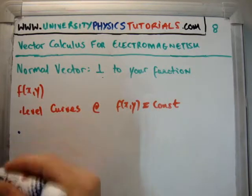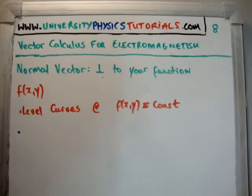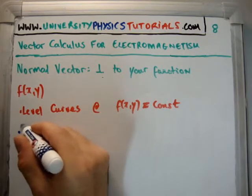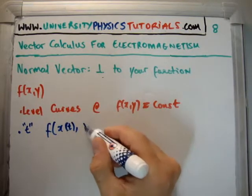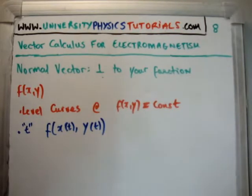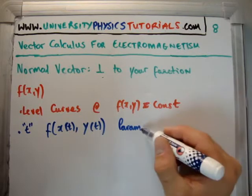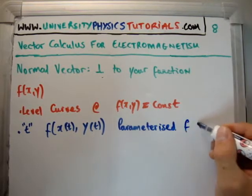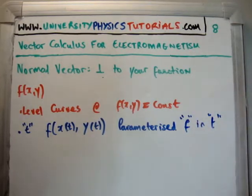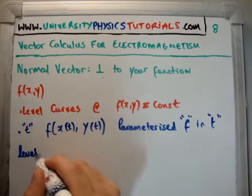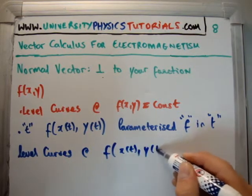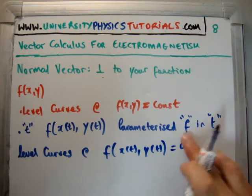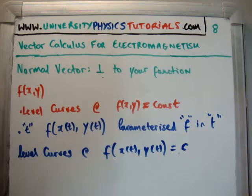What I'm going to do now is parameterize my function using a placeholder variable t — this is just a dummy variable. So f is now a function of x(t) and y(t). We've parameterized f in t. This means that level curves occur at f(x(t), y(t)) equal to a constant, the derivative of which would of course be zero. That's exactly what we're going to use.